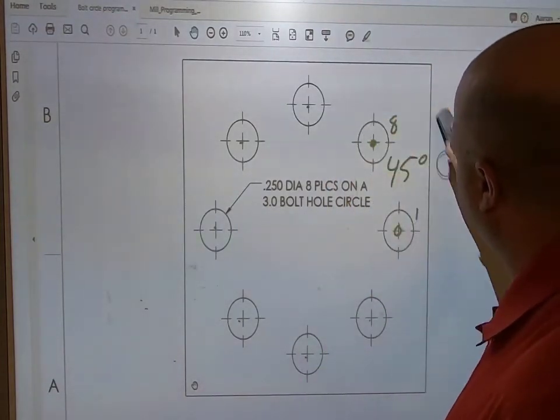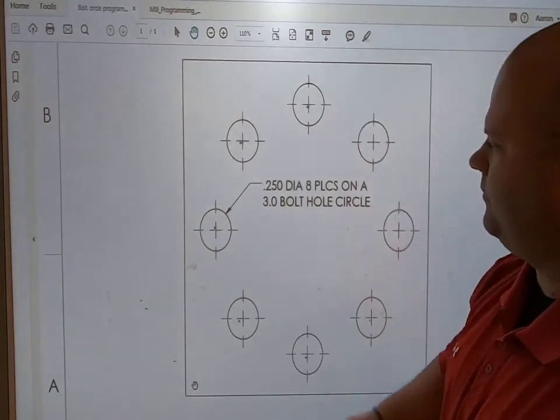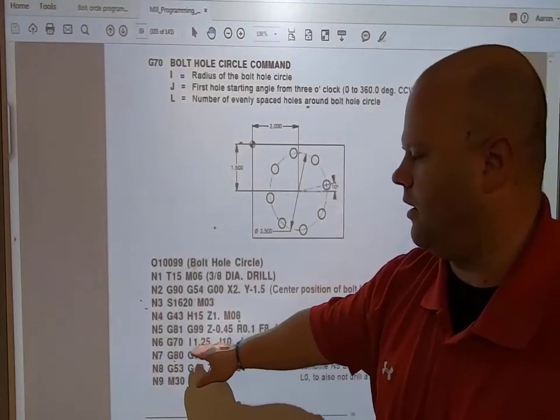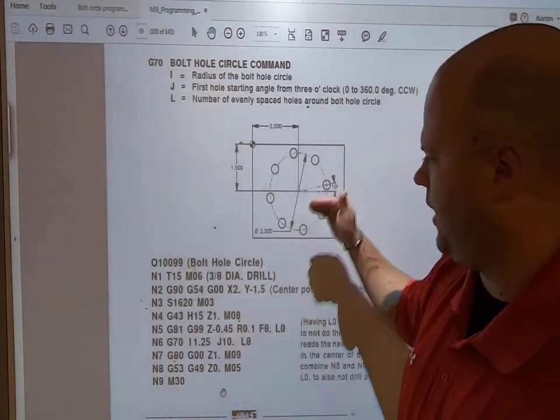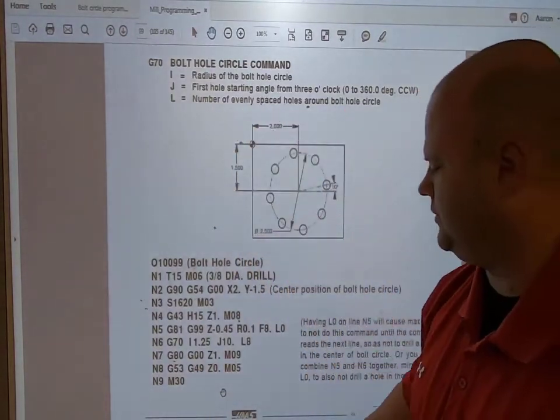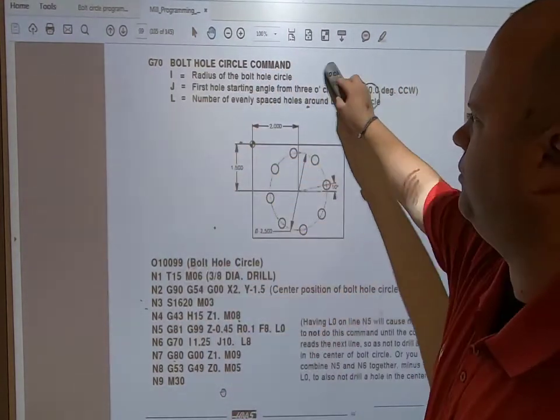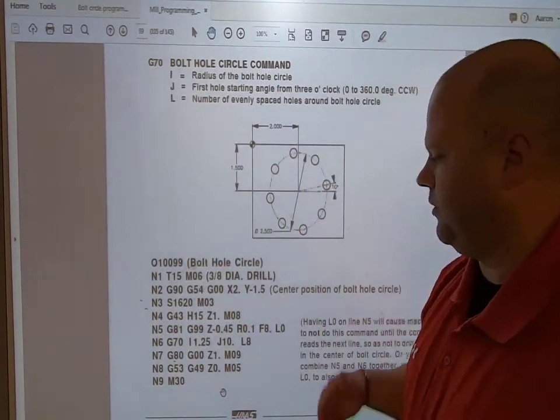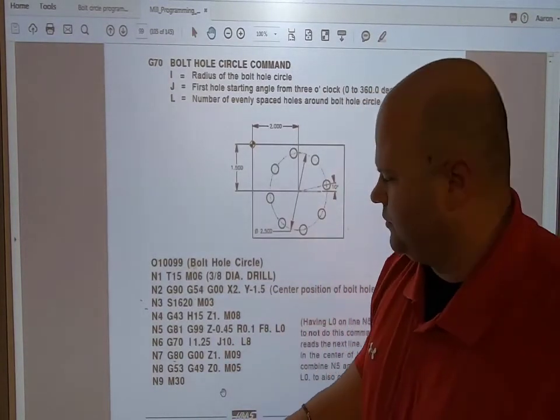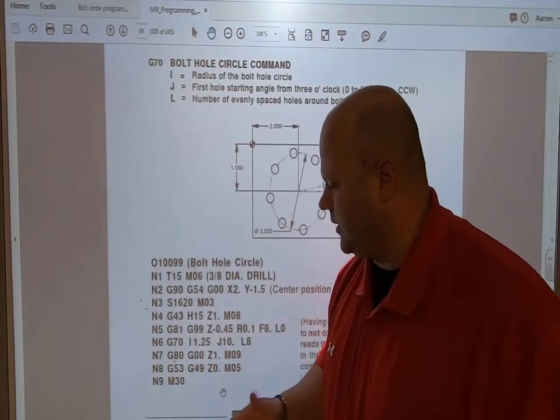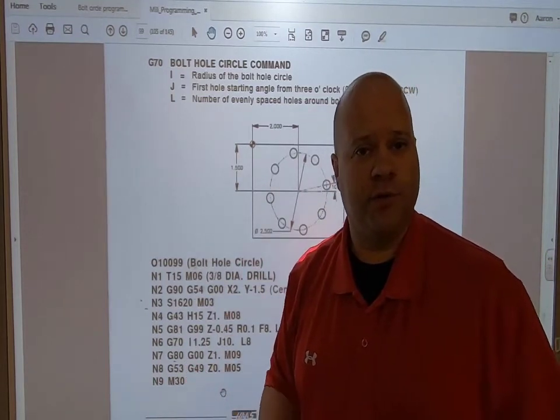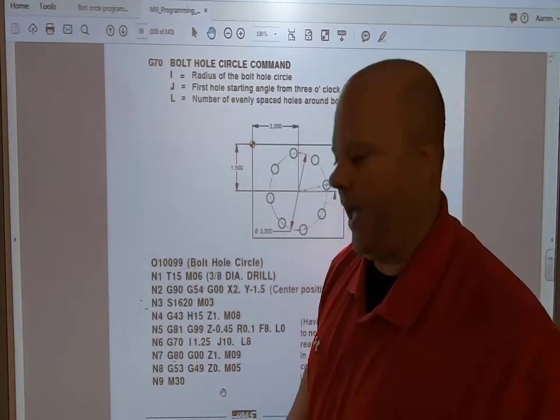Now that we have the code, what's next? We have from zero our I, which is the distance over, our J, which is our first angle, and we have L, the number of evenly spaced holes around a bolt hole circle. G80 is going to cancel our drill canned cycle so we can rapid one inch above the part. Then we turn off our coolant and so forth. Now let's see what that bolt hole circle looks like in action.